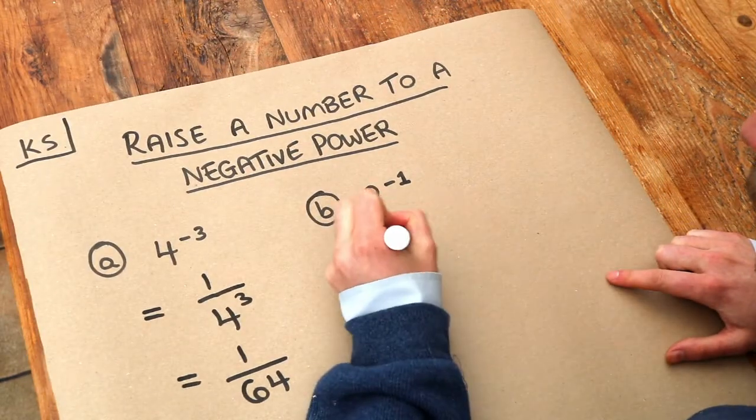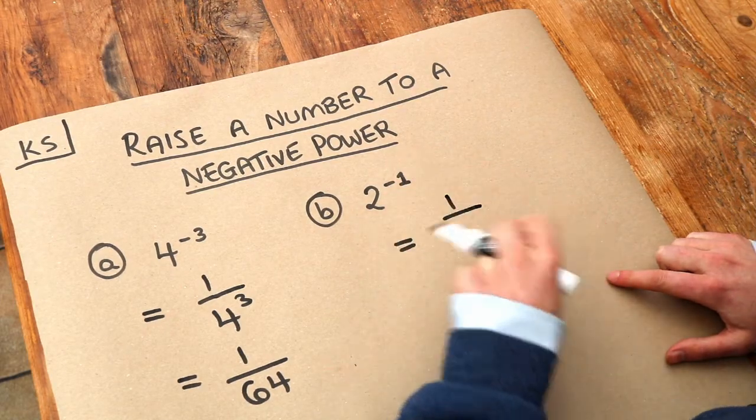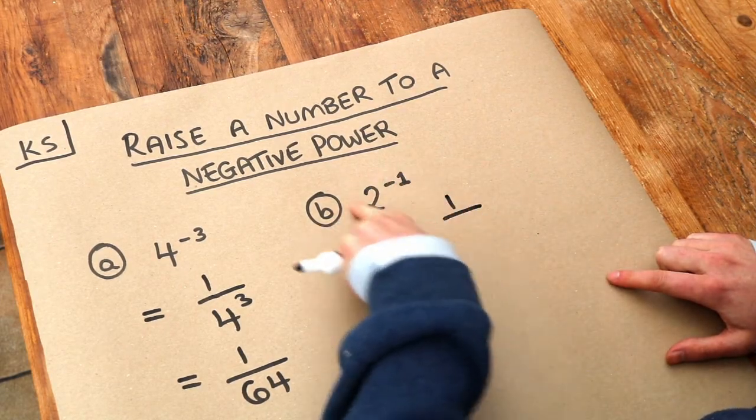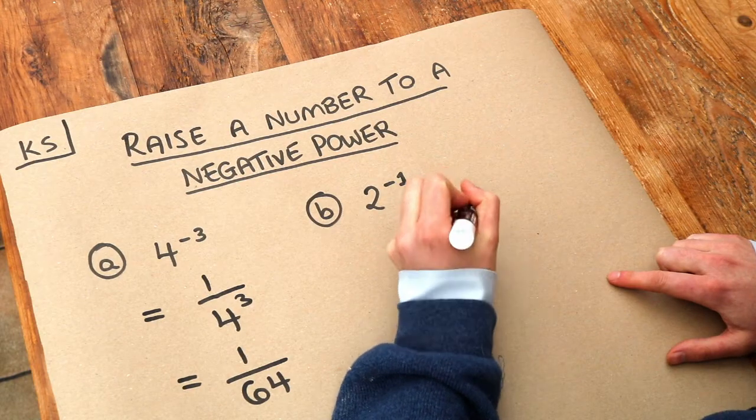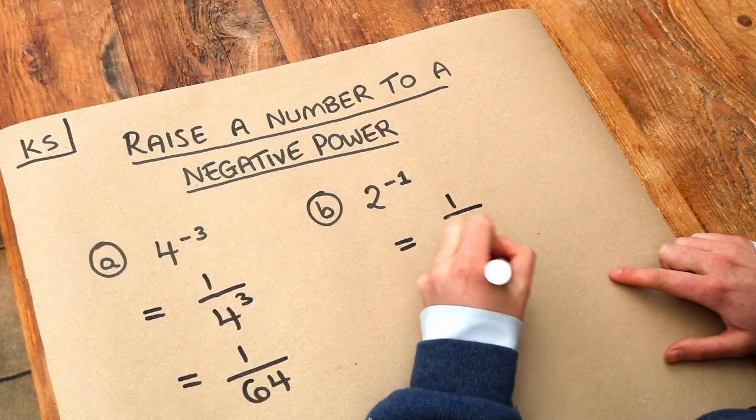This second example, we have a negative index here. So we do 1 over it. So it's going to be 1 over then this same thing but without that negative there. So 2 to the power of 1 and 2 to the power of 1 is just 2 so it's half.